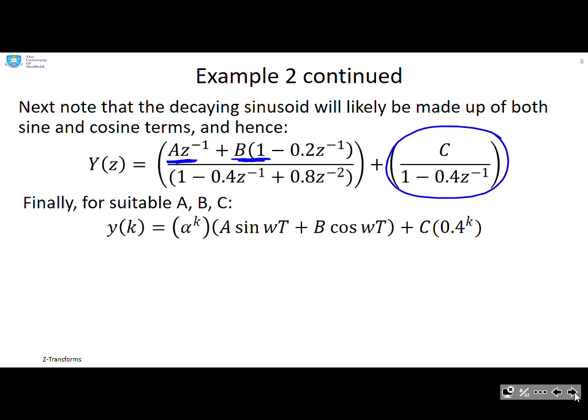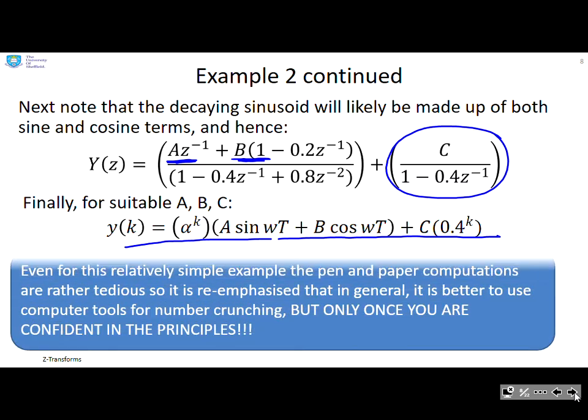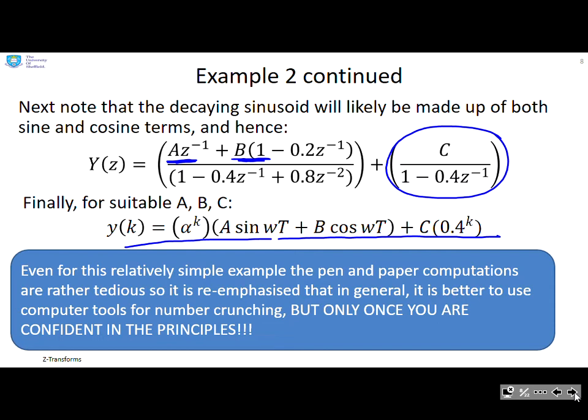Once I've got suitable A, B, and C, I can do the inverse Z-transform by inspection because I've now got the forms that are in the table. But here's the key point: you can see immediately that this is quite tedious. I haven't even solved for A, B, and C and you're already bored.